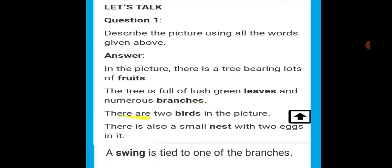Next, there are two birds in the picture. How many birds are there? Two birds. There is also a small nest with two eggs in it.